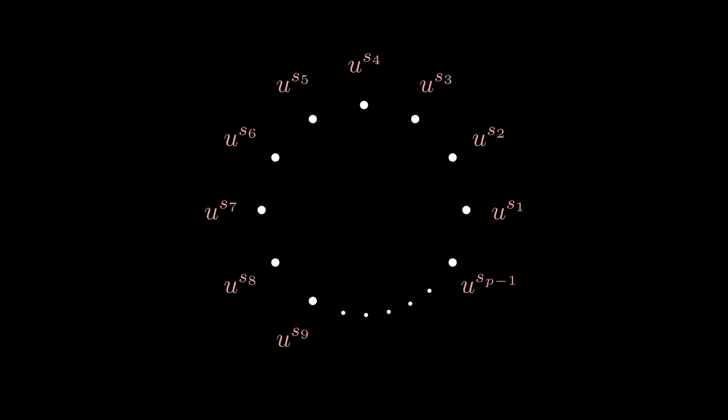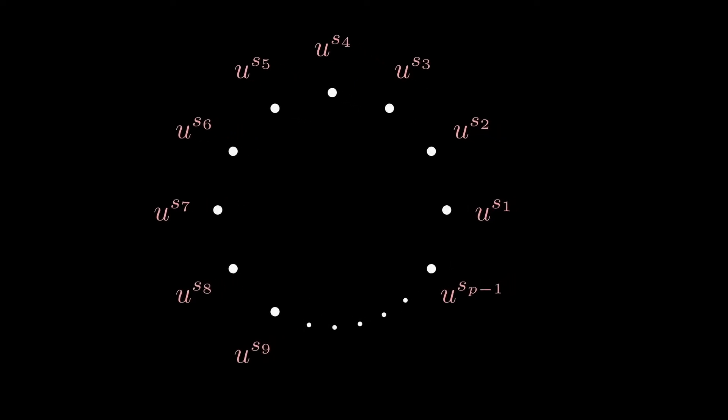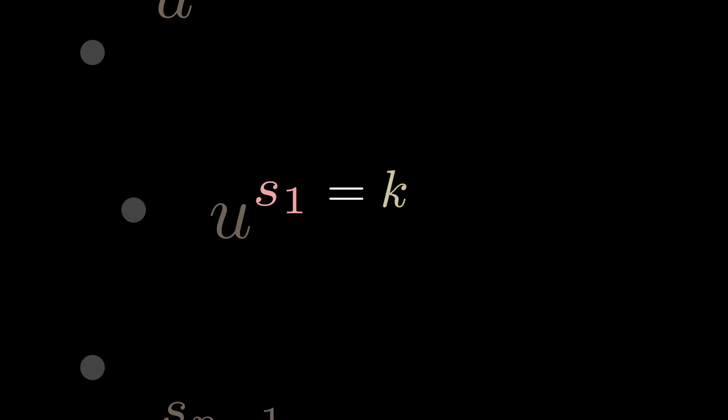Write every element as a power of U. Now comes the killer move. Let's cleverly choose to rewrite the powers themselves as k, our chosen number of colors, times a quotient plus a remainder r, basically just Euclidean division by k. Those remainders are integers between 0 and k-1. In other words, they can take k possible values.